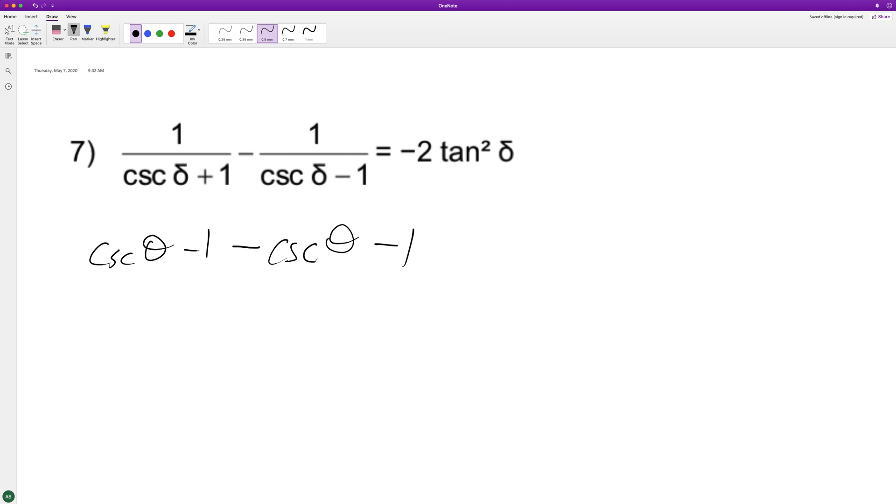This is gonna be over cosecant squared theta minus one. So these cancel out and we get negative two on top. The cool thing about this is it's the cotangent squared theta.